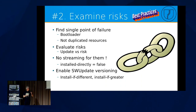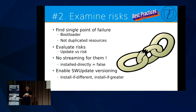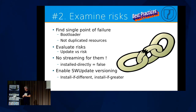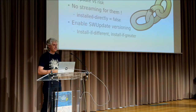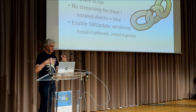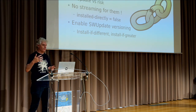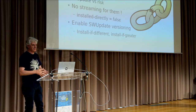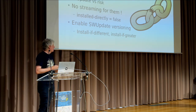If you have a single point of failure, also enable versioning. SWUpdate can detect if an artifact has the same version as what's already installed. Enable the relevant flags in the sw-description file. This allows you to deploy a single release file containing everything — including the bootloader — and SWUpdate will only install an artifact if there is a version mismatch. So you don't need a separate file just for the bootloader.